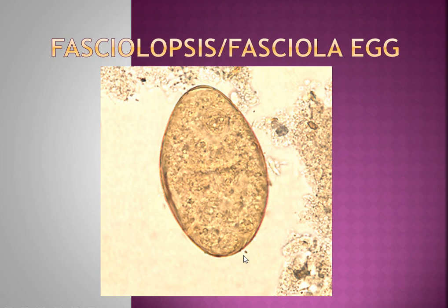For trematodes: the metacercariae is the infective stage for humans. Hosts include fish, crabs, and crayfish. Patients get these from eating those animals or from raw water plants found in contaminated ponds or water sources.